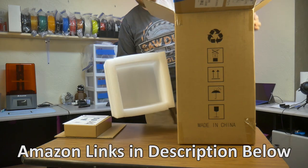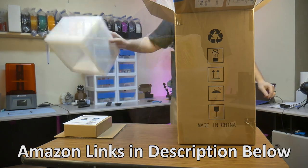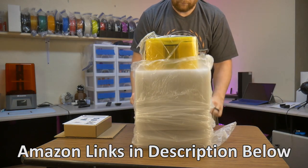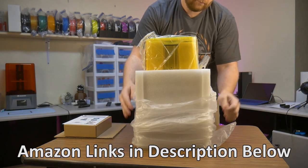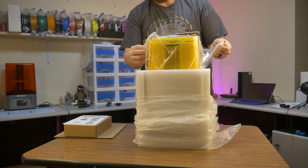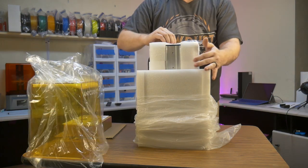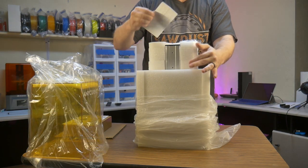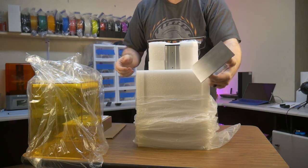Like most resin printers, this one was nicely packed in a sturdy box with some open cell foam and plastic wrap. The accessory box was packed on top of the printer and the build plate and resin vat was packed inside the printer.